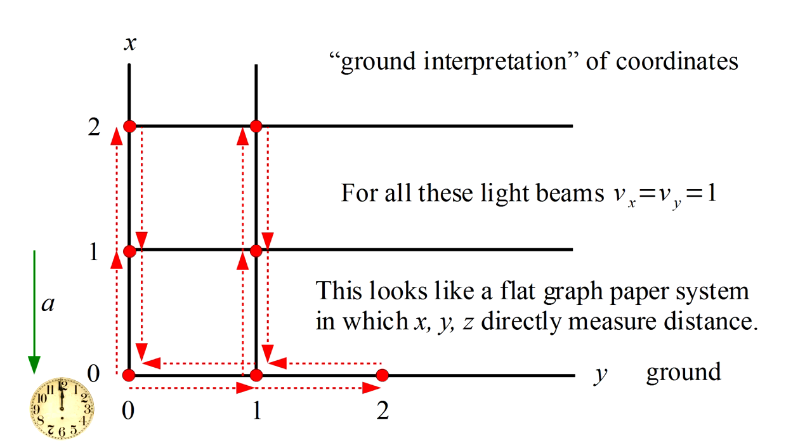Now notice, for these measurements we only use light beams for which the theory says the speed of light is one. We never used beams that, according to the theory, would have shown a different speed of light.